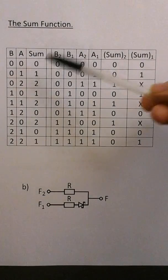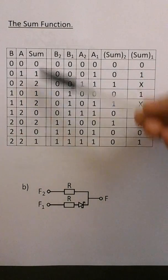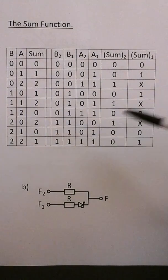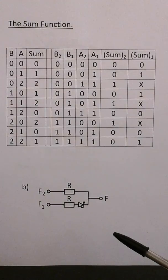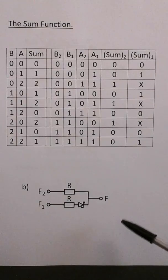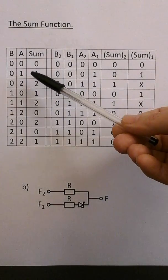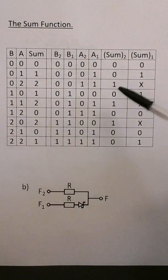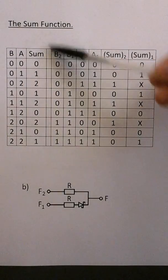Here we have the sum function. Sum equals a plus b modulo three. These are the ternary inputs a and b, and this is the sum function output. I'm coding a and b with binary variables a1, a2, b1, b2 as before. But this time sum2 and sum1 follow a different coding — I'm using output resistor network B from my fifth video. For ternary logic zero, sum2 is zero and sum1 is zero. For ternary one, sum2 is zero and sum1 is one. For ternary two, sum2 is one and sum1 is a don't-care state.